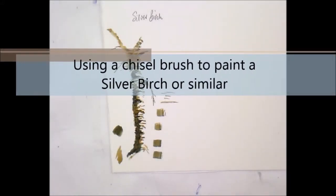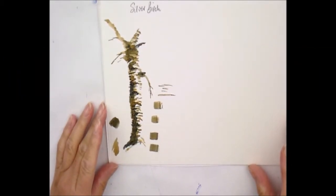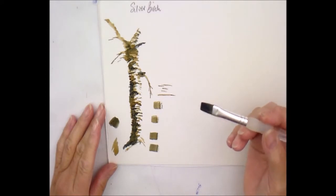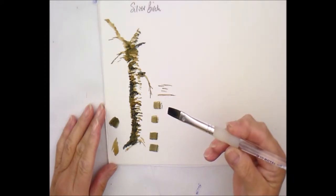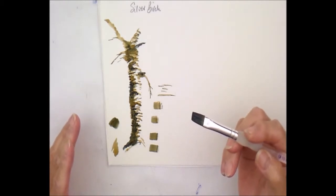Continuing with the letting the brush do the work theme, there's a tree here. I'm going to show you how to use a chisel brush. This is a number 10 chisel, and that's what we would call in England a silver birch tree.